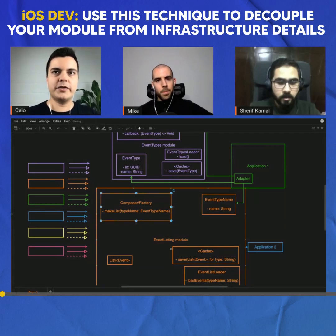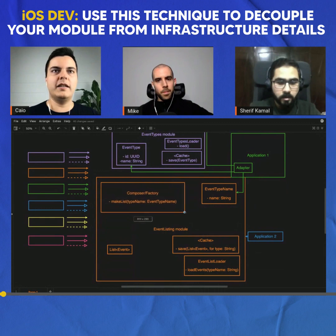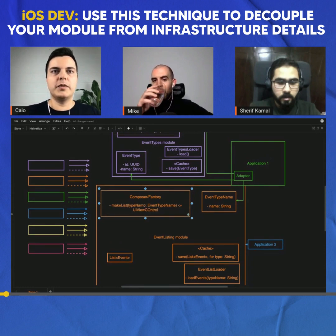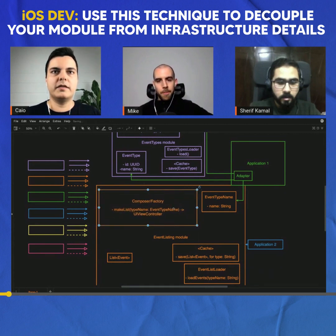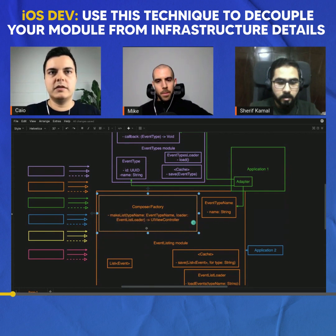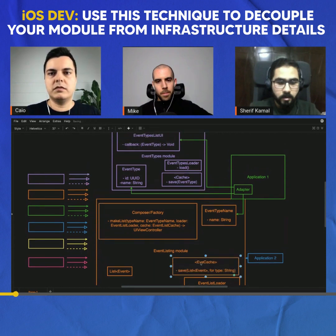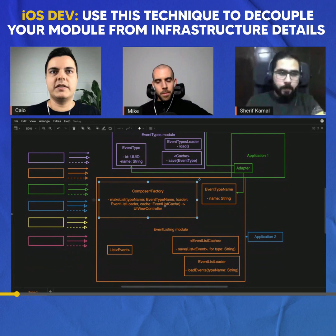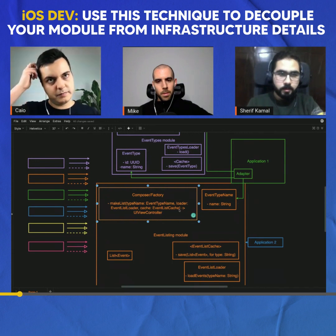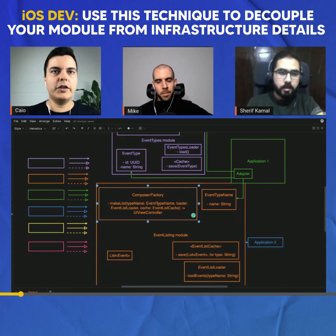We have some kind of composer inside your module. The entry point, like `makeListViewController`, returns a UIViewController with the composition. You need to pass a type name and then two loaders — the event list loader and a cache. The cache is for remote and cache post-load. You also mentioned passing a URL — do you pass it in, or do you create the URL inside the composer?